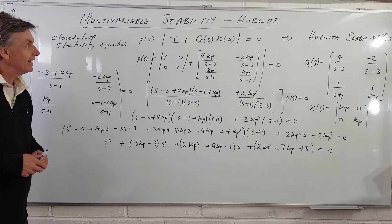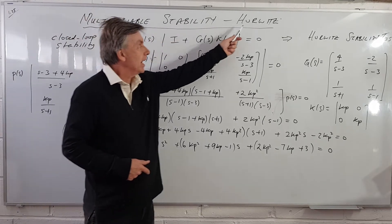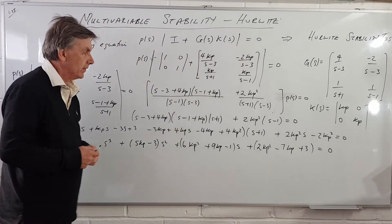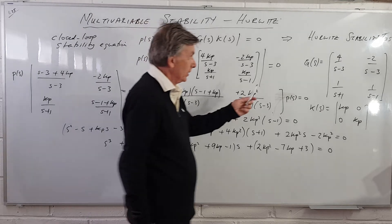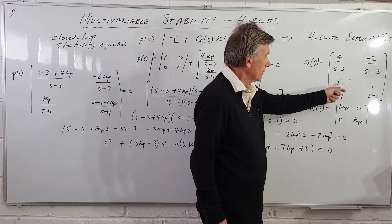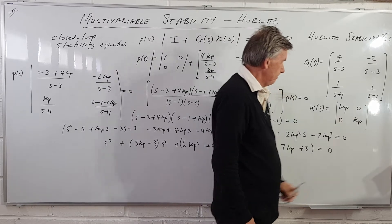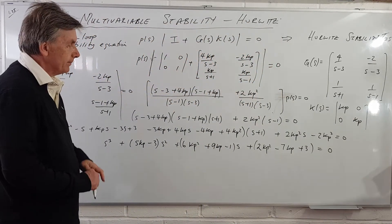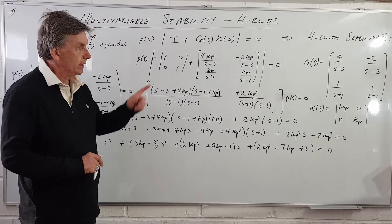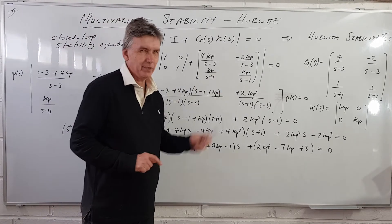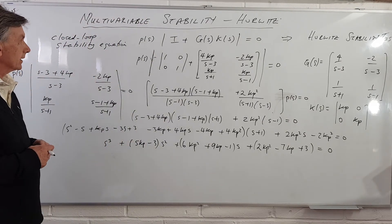Good afternoon. Today we're going on multivariable stability and our Hurwitz approach to multivariable stability. We're looking at the same example as the one we looked at previously: 4 over s minus 3, minus 2 over s minus 3, 1 over s plus 1, 1 over s minus 1. If we go back to our Nyquist approach to this, we knew that the answer was Kp greater than 3. So we'll just bear that in mind as we go through the calculations.